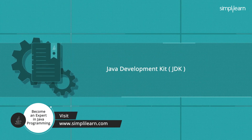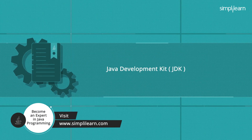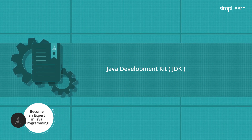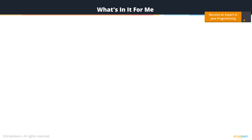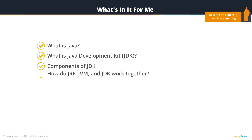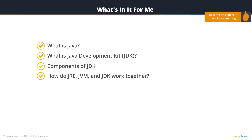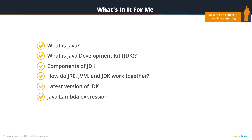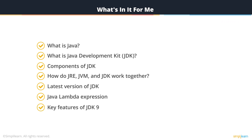Hello and welcome everyone. In this video, we'll be looking into the Java Development Kit. We are going to talk about what is Java, what is the Java Development Kit or JDK, the components of JDK, how JRE, JVM, and JDK work together, then the latest version of JDK. We'll also see what Java Lambda Expression means and the key features of JDK and JRE.